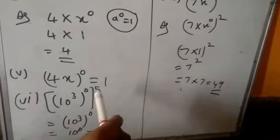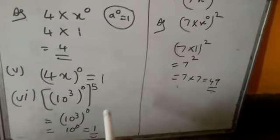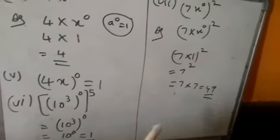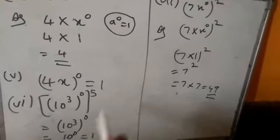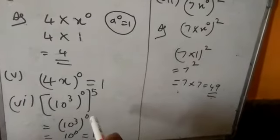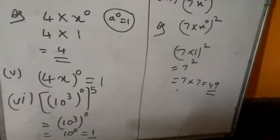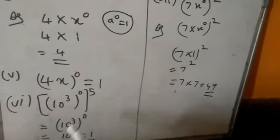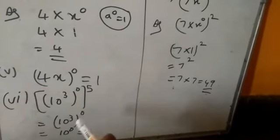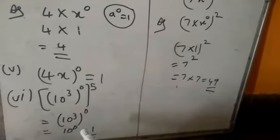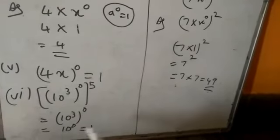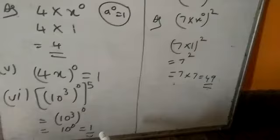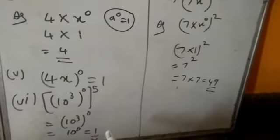Sixth one: (10 cubed) to the power of 0, whole to the power of 5. First apply the formula a to the power of m, whole to the power of n. So 10 to the power of 3 into 0 into 5. Three into 0 equals 0, and any number into 0 equals 0. So 10 to the power of 0. Any number to the power of 0 equals 1. Sixth answer is 1.